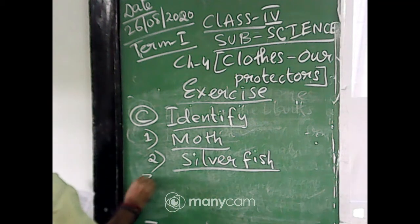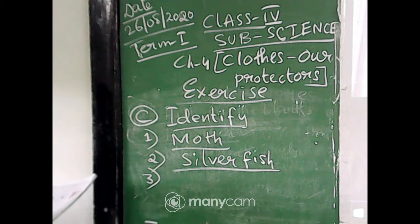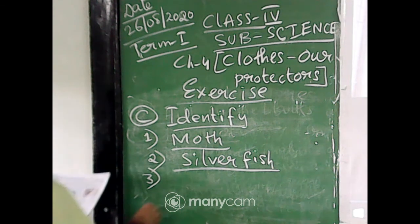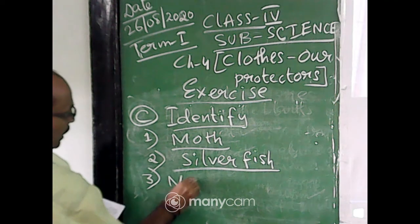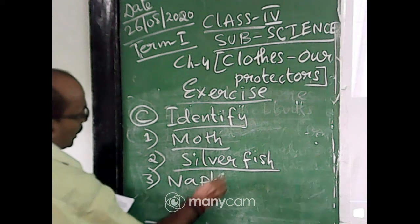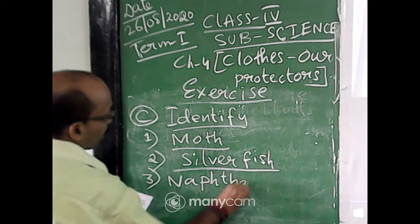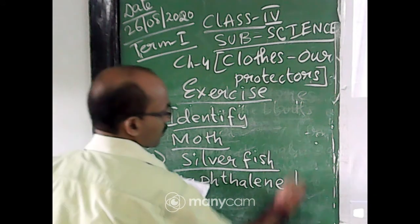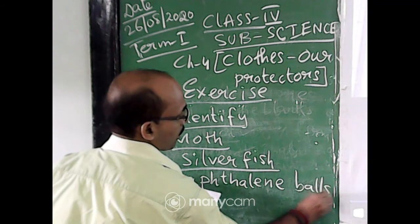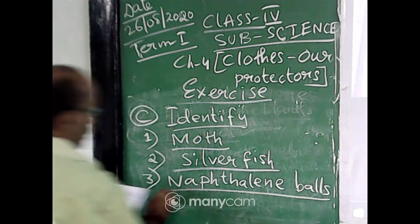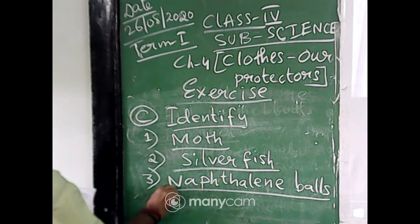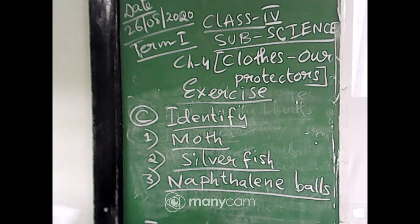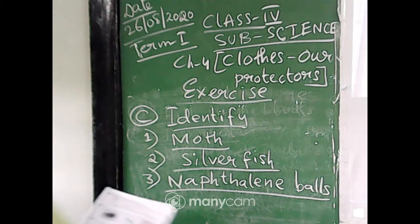Number three is naphthalene balls. The spelling is N-A-P-H-T-H-A-L-E-N-E balls. This is naphthalene balls, and section C is completed.